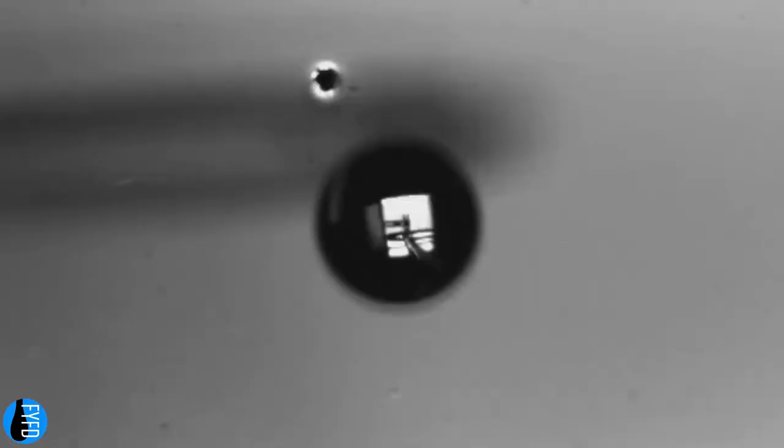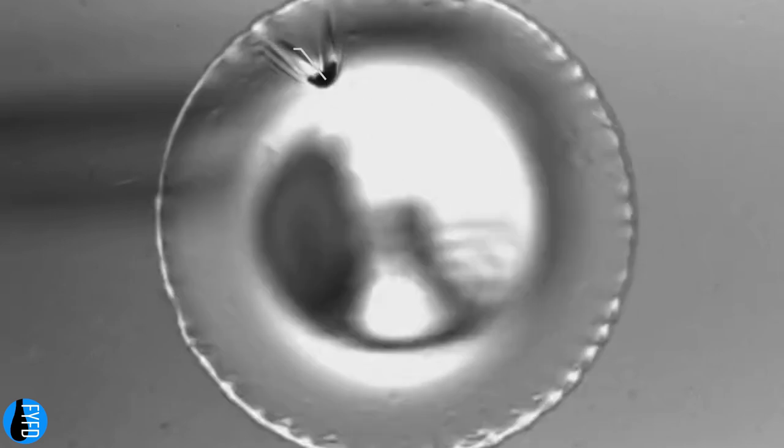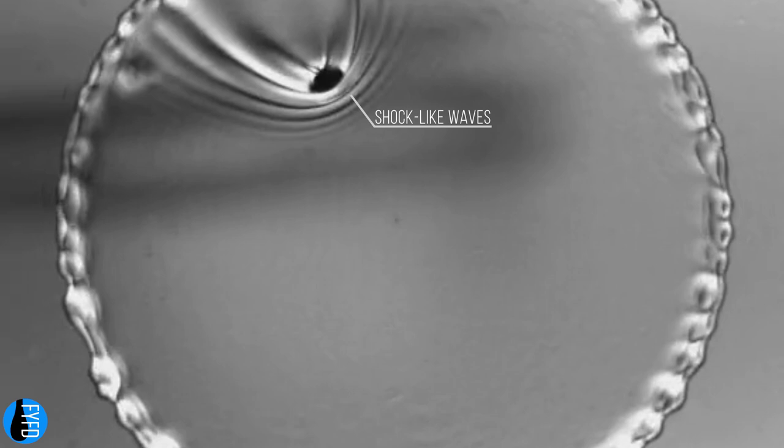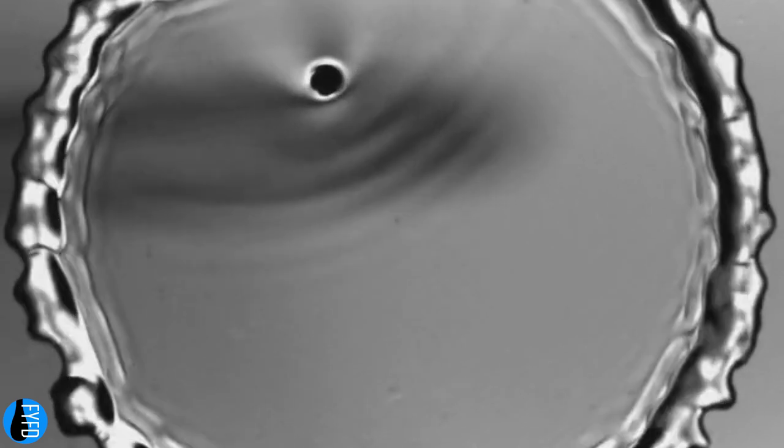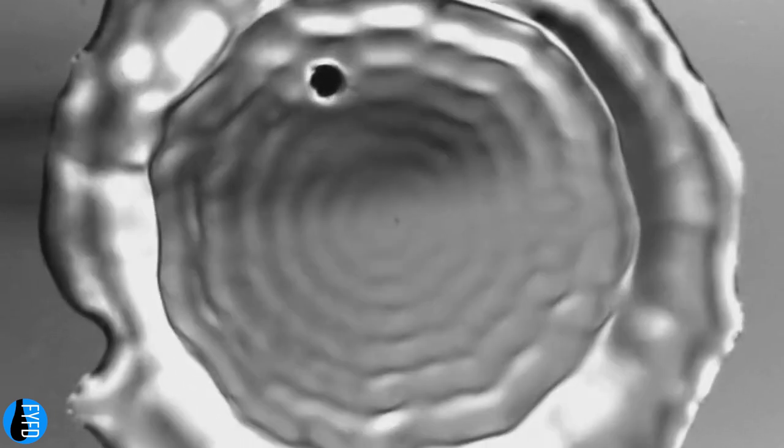Here we see a smooth surface with a single disruptive bump. As the water drop impacts, it spreads and hits the bump, creating a series of shock-like waves. These waves change the thickness of the spreading drop, disrupting the thin layer.